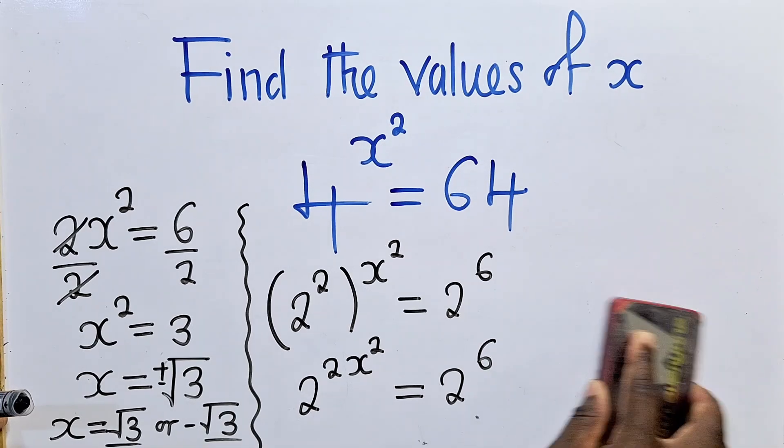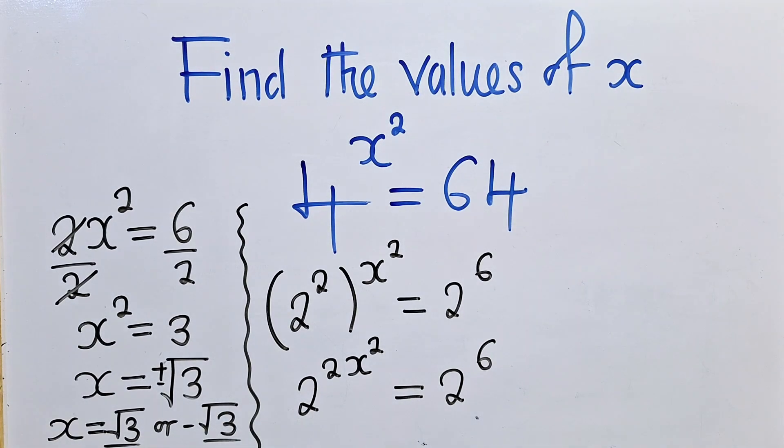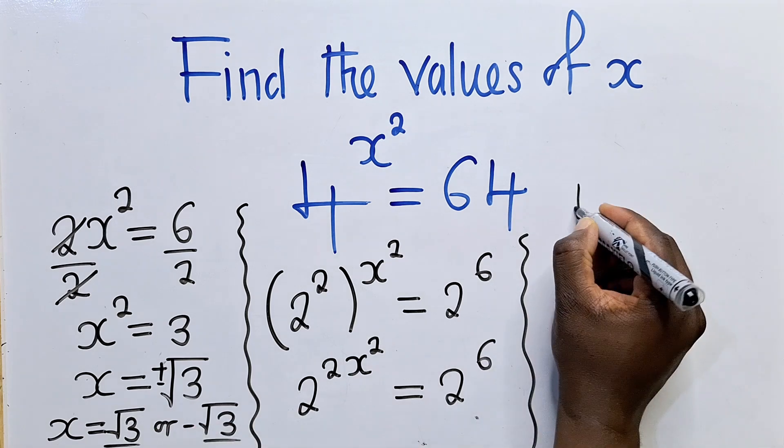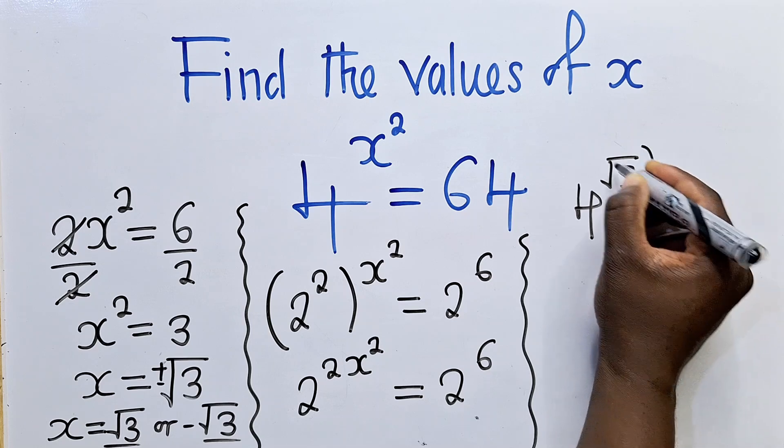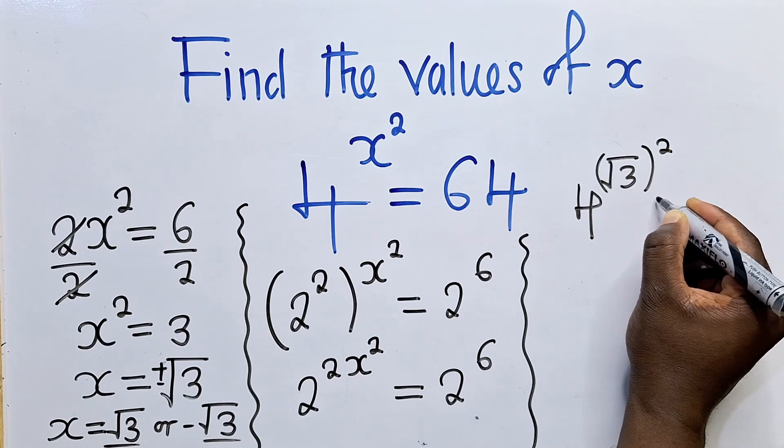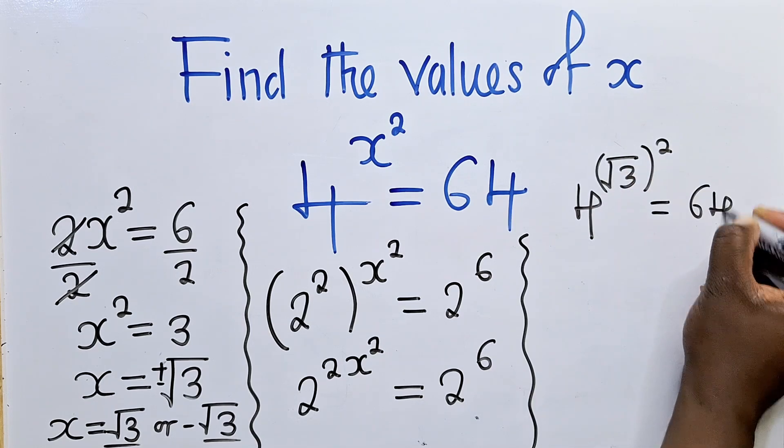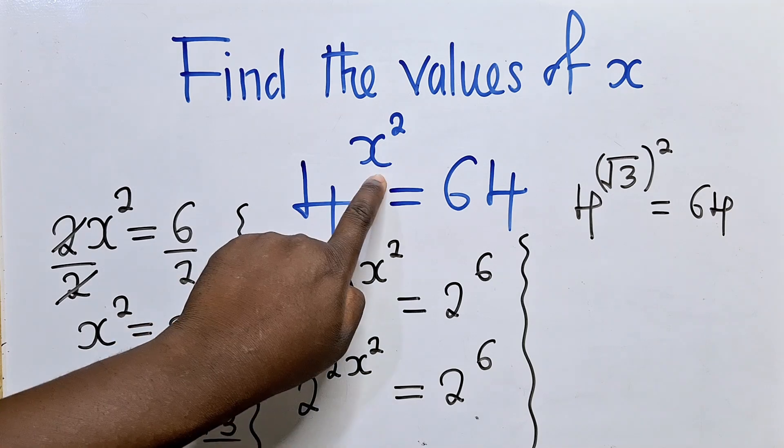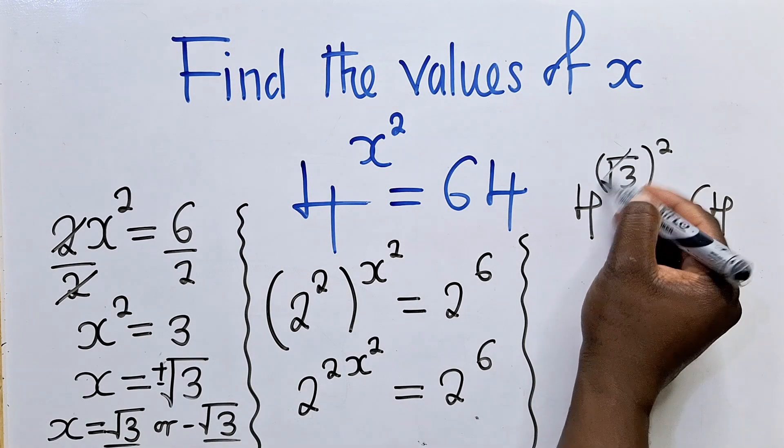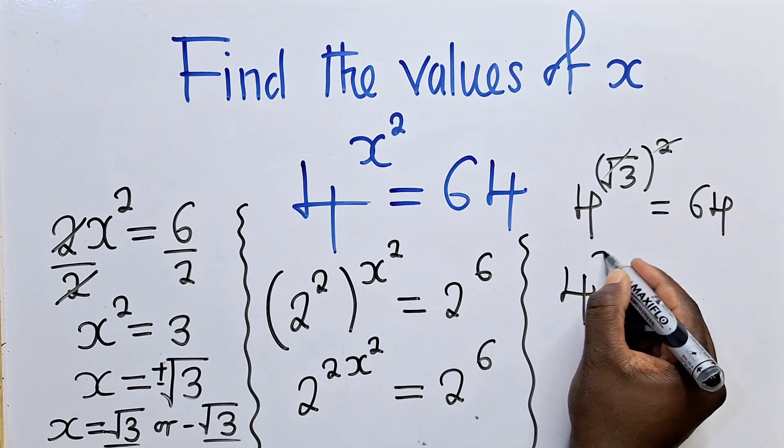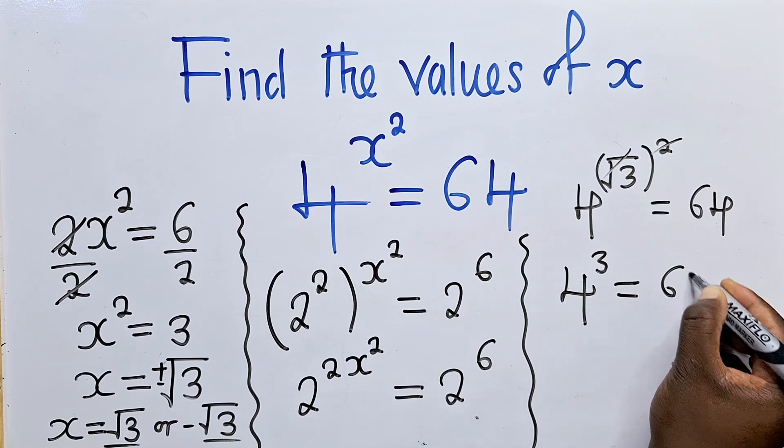We can now try to prove and see if really these are true solutions. So we shall say 4 power square root of 3 squared is equal to 64. So in place of x here, we write square root of 3. The root and the power 2 will go, we shall remain with 4 power 3, which is equal to 64.